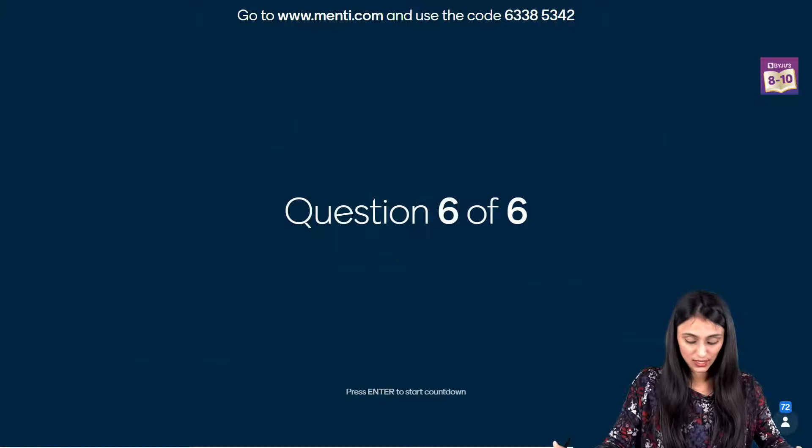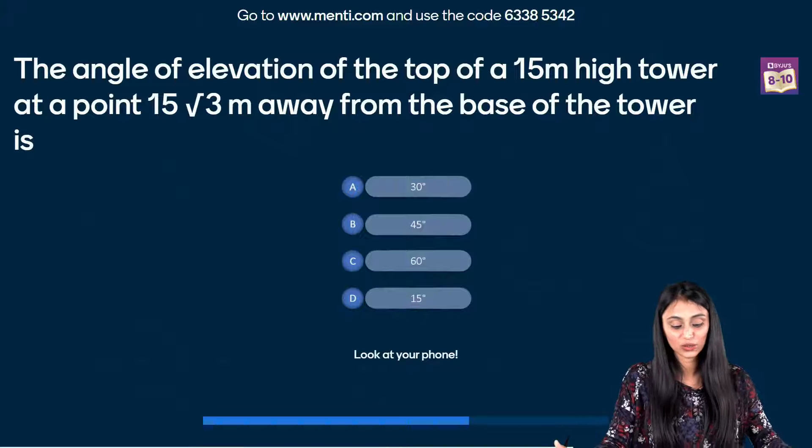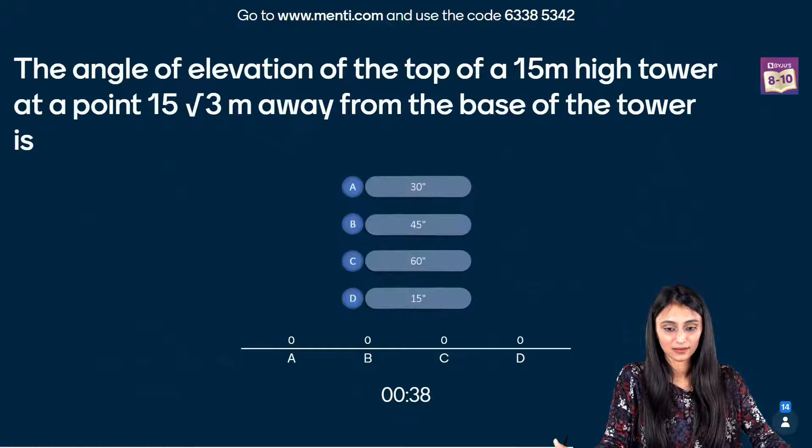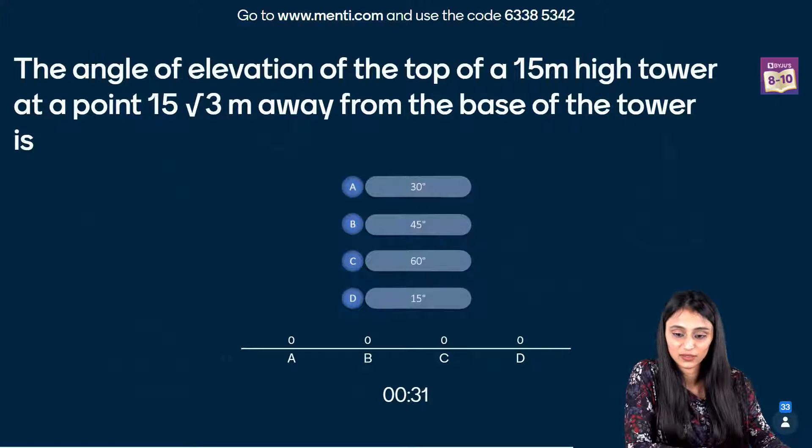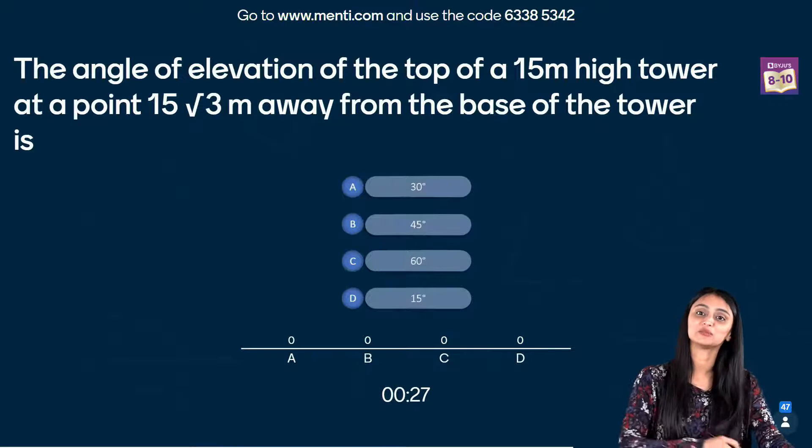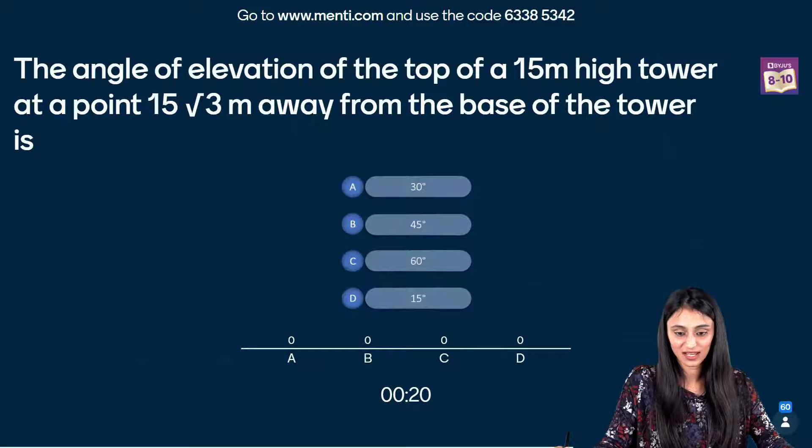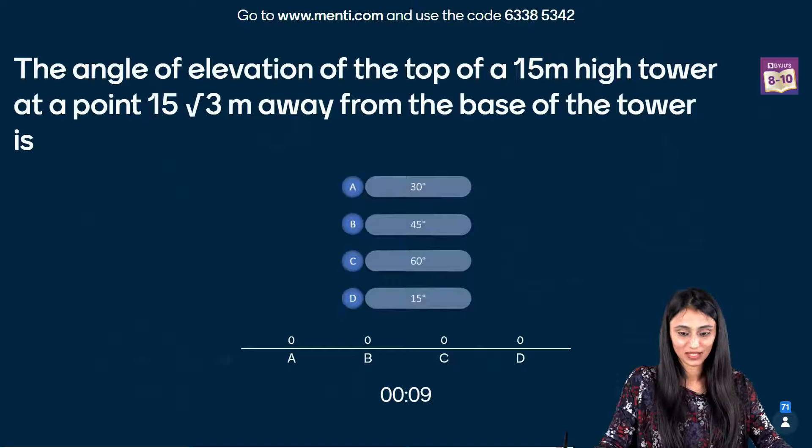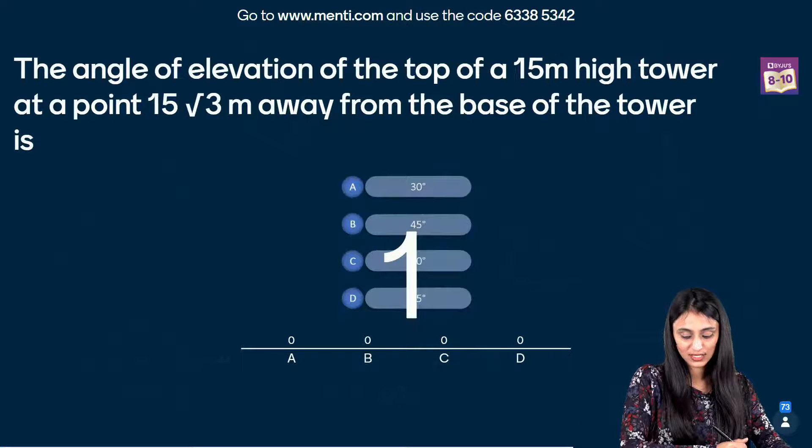So this is the last question of today's quiz. Question number 6. The angle of elevation of a top of a 15 meter high tower is over at 0.15 root 3 meters away from the base of the tower is. Make a figure first. Hmm. All right. Arpan has given the answer already. Wow. Great speed, Arpan, I must say. Yes. Charvi, 1.536 seconds. Good. Sukjot has also given the answer. Archit has given the answer. Just one second. Divya, mis-clicked. All right. Okay, okay. So your time is up. All right.